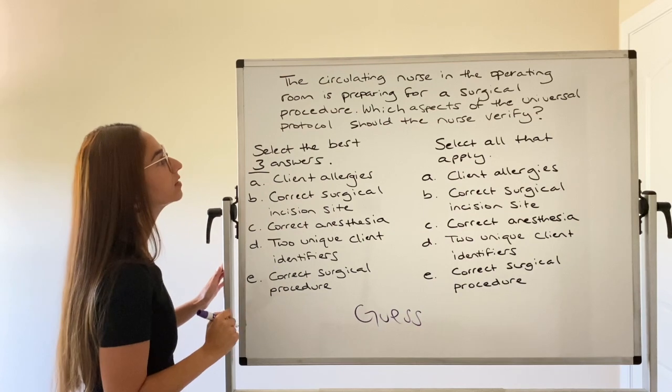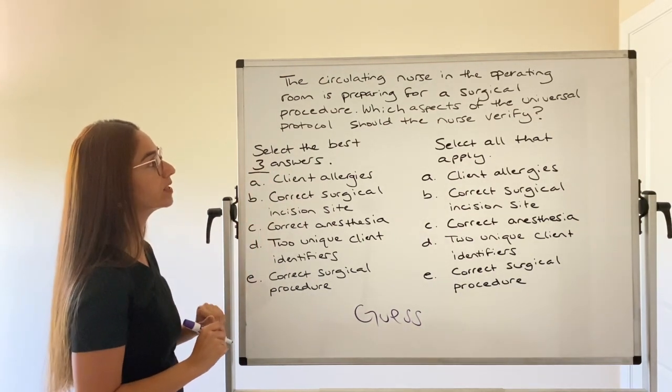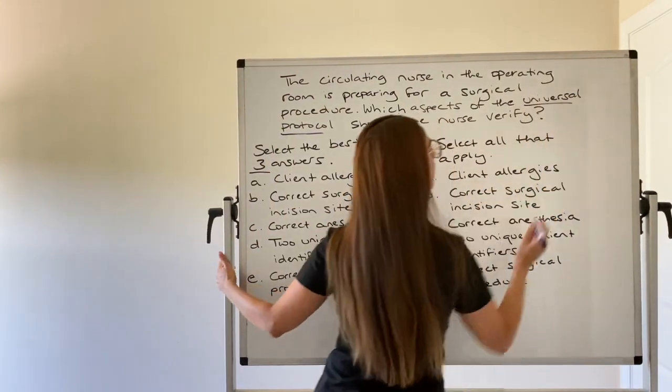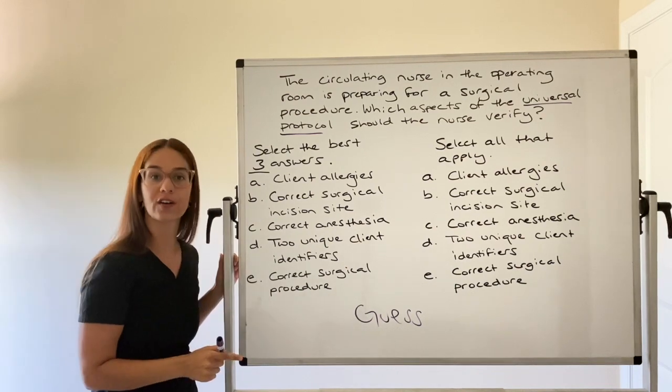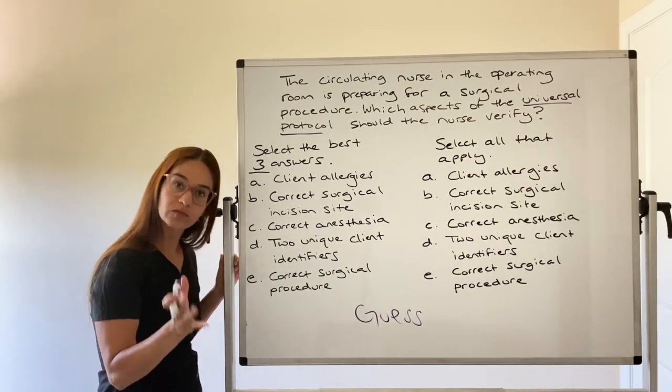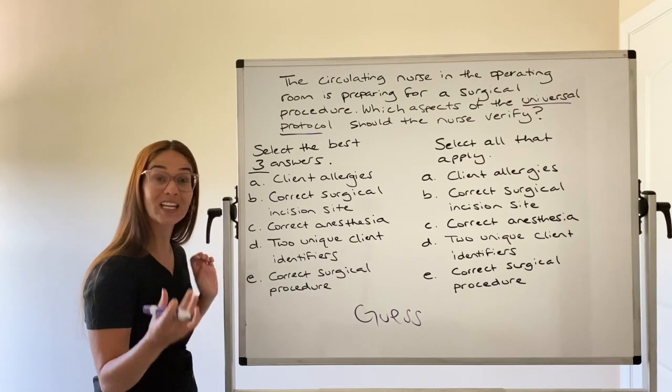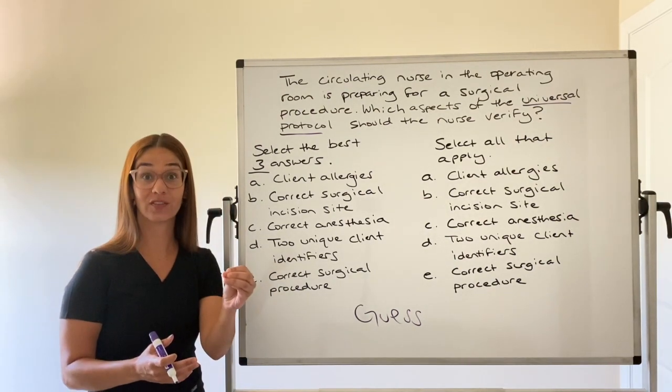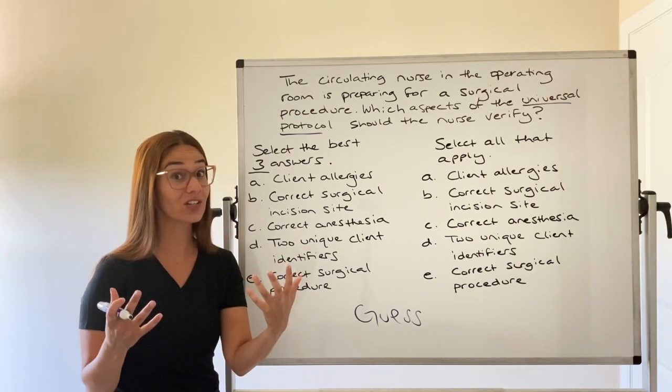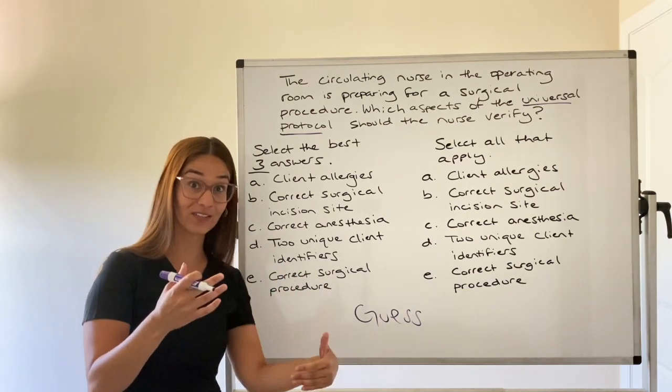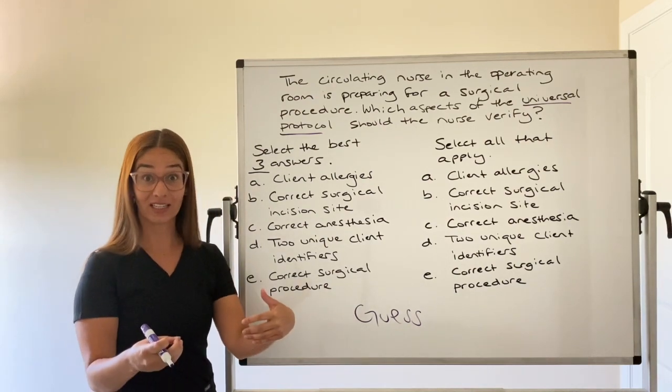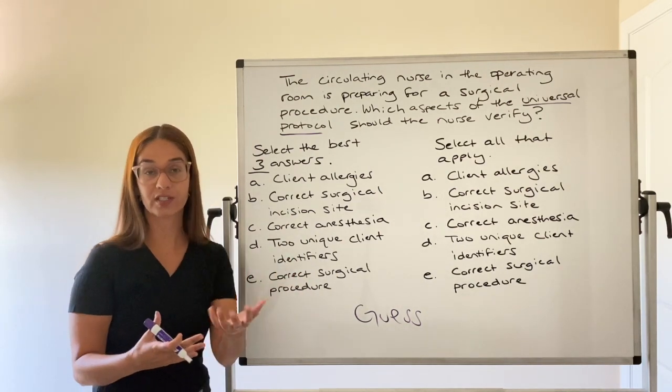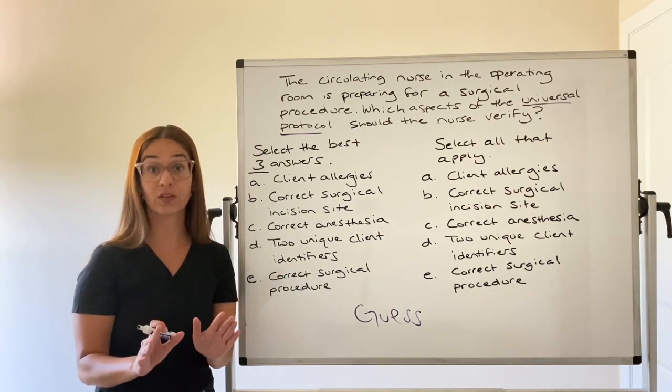So let's look at our question. The circulating nurse in the operating room is preparing for a surgical procedure. Which aspects of universal protocol should the nurse verify? So universal protocol, aka timeout procedure, we had to implement this to ensure that we were keeping patients safe during surgery. For instance, to make sure that instead of operating on the left knee, we're operating on the right knee. Wrong limbs have been operated on. So these safety measures came into place to assist to prevent those errors from occurring.